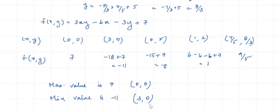So for finding absolute values inside a closed region, we first find the critical values inside the region, then find critical values on the boundaries, and also calculate the values at the endpoints of the region, comparing these values to obtain the absolute maximum or absolute minimum. Thank you.